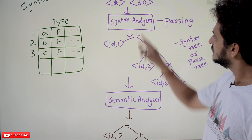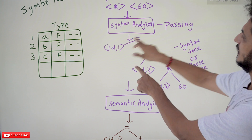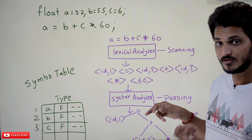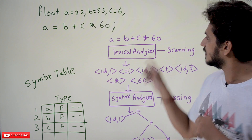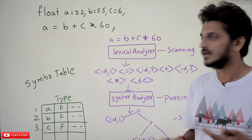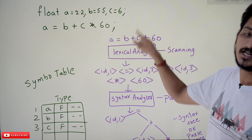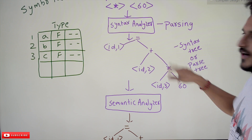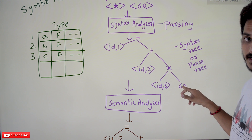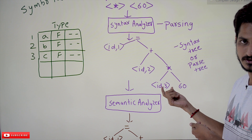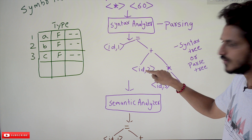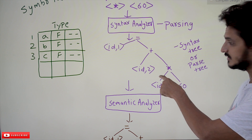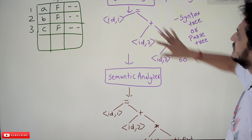The syntax analyzer takes the tokens and generates a parse tree. For the expression a = b + c * 60, which operation must be done first? 'c * 60' should be done first because '*' has the highest precedence. Then its output is added to 'b', and the result is assigned to 'a'. This is identified in the syntax tree as: id1 = (id2 + (id3 * 60)). The tree shows id3 multiplied by 60 happens first, that result is added to id2, and then assigned to id1. How this tree is generated will be explained in next classes.